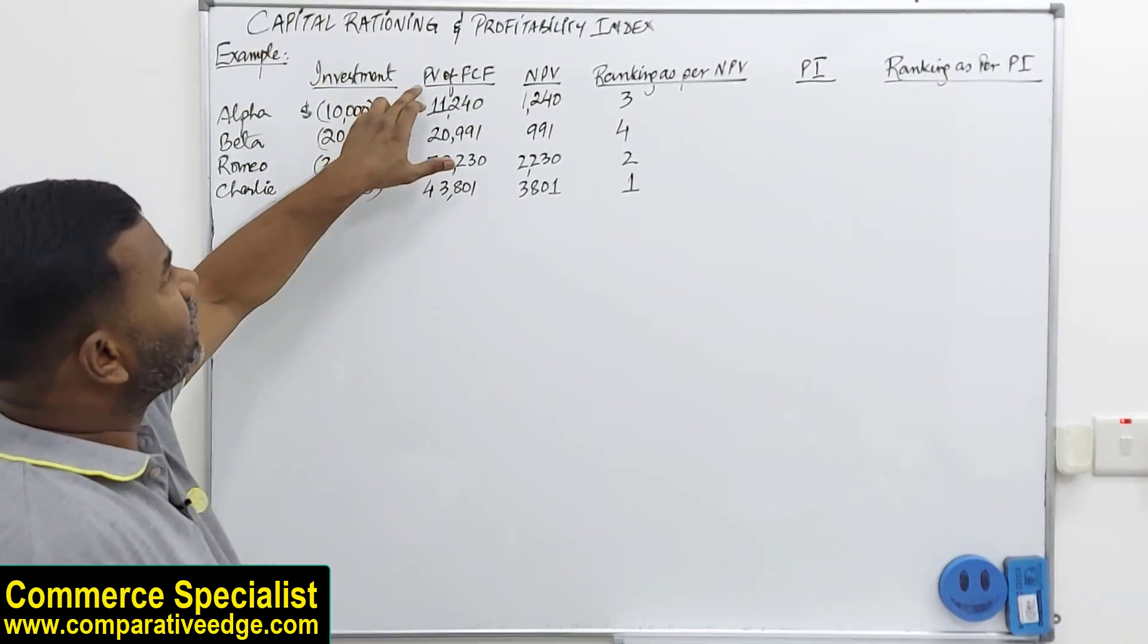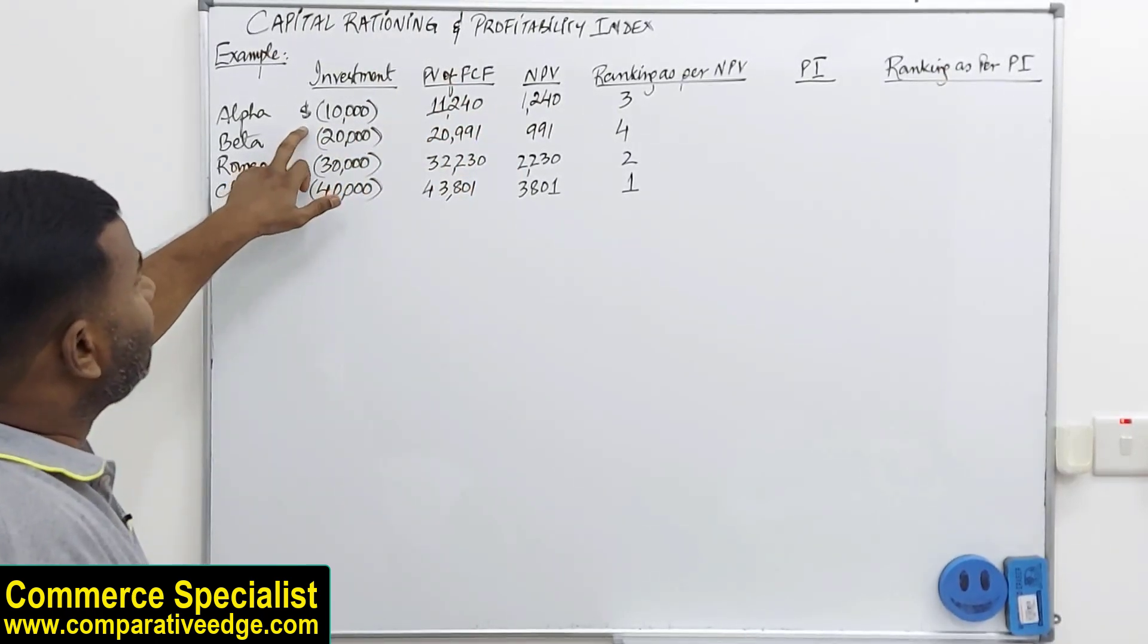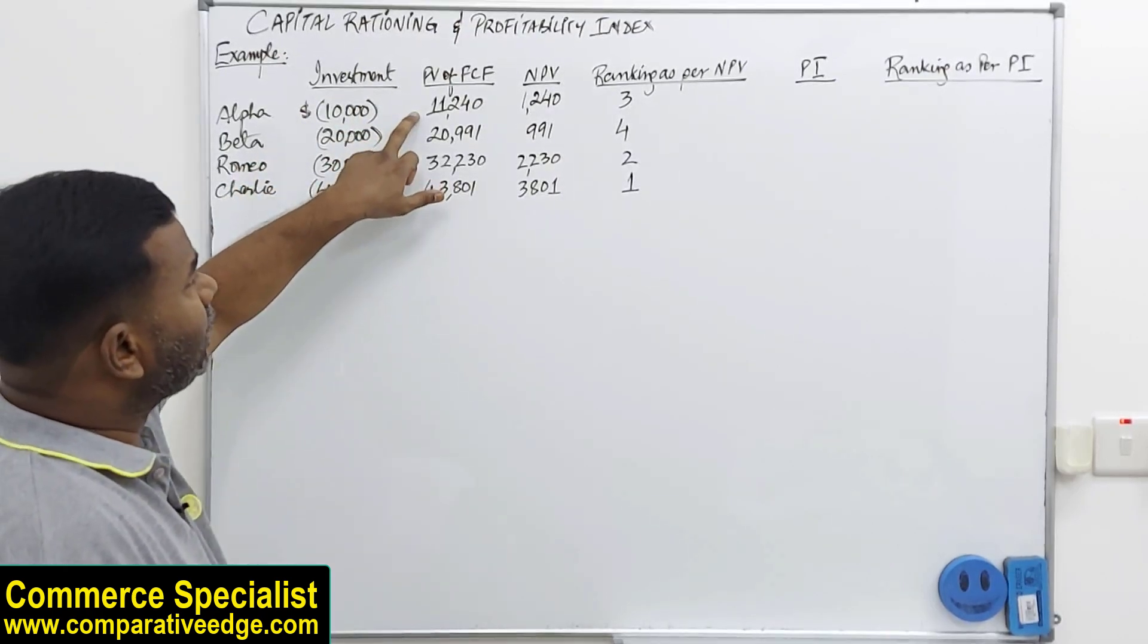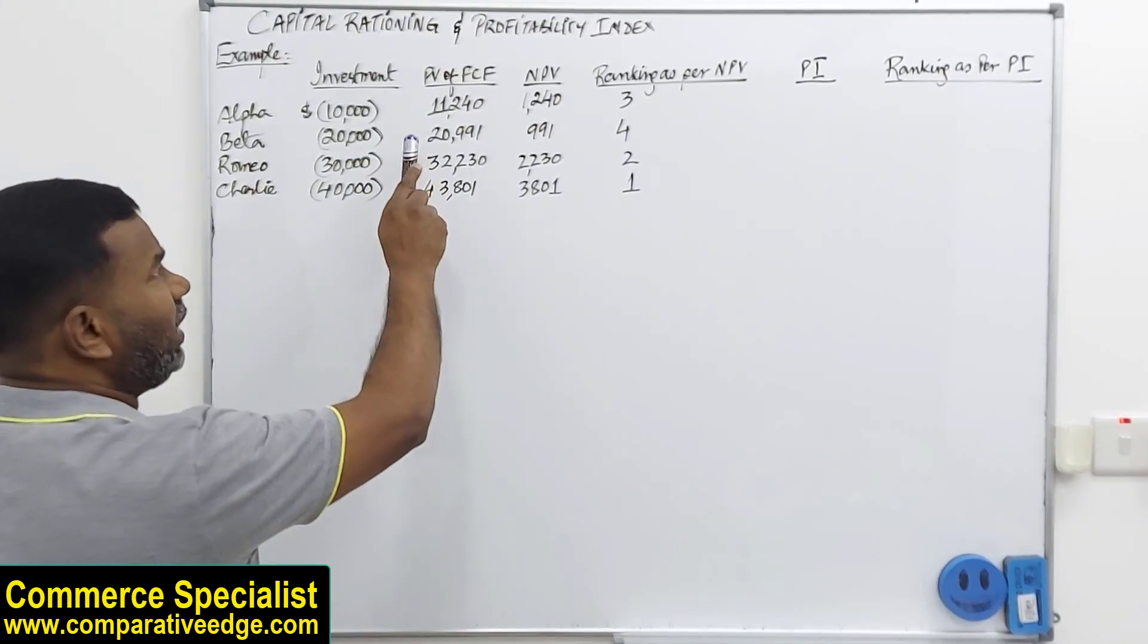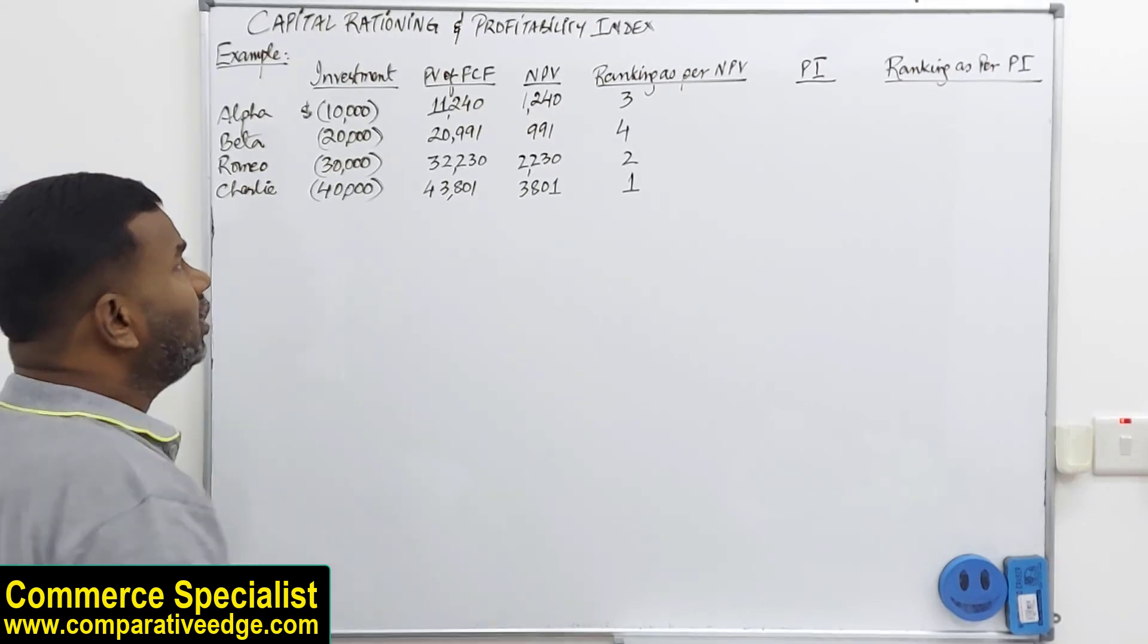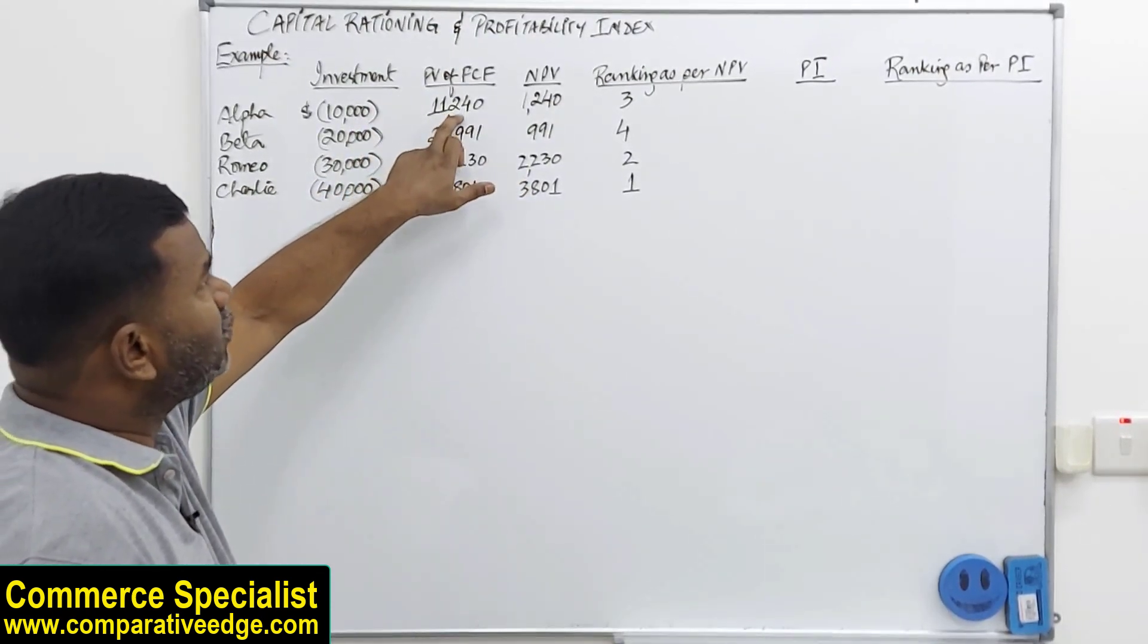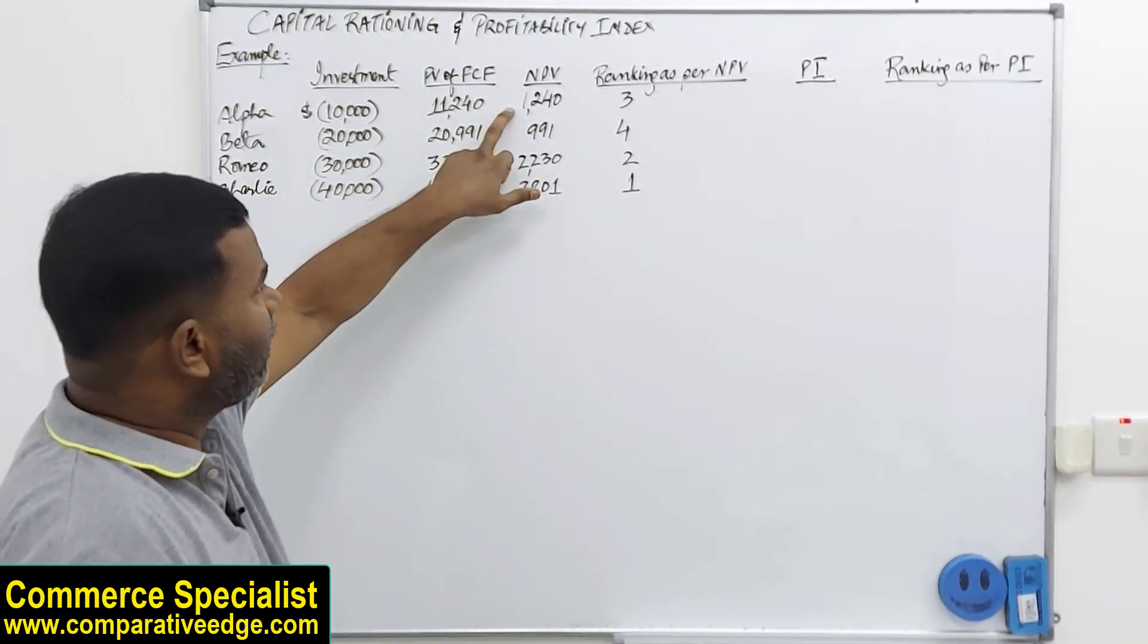We are already given the present value of future cash flows. So if you invest in Alpha 10,000 in year 0, all the future cash flows' present value would be 11,240. This will give you a present value of cash flows 20,000, 32, and 43. So NPV is already calculated from present value of future cash flows.